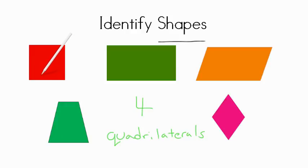This shape here might look really familiar to you. This is a square. A square has four sides, and they're all equal in length. They're exactly the same. They also have four right angles.